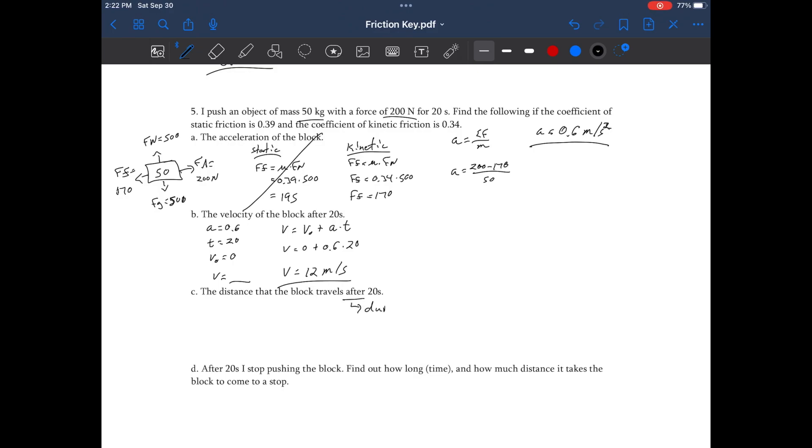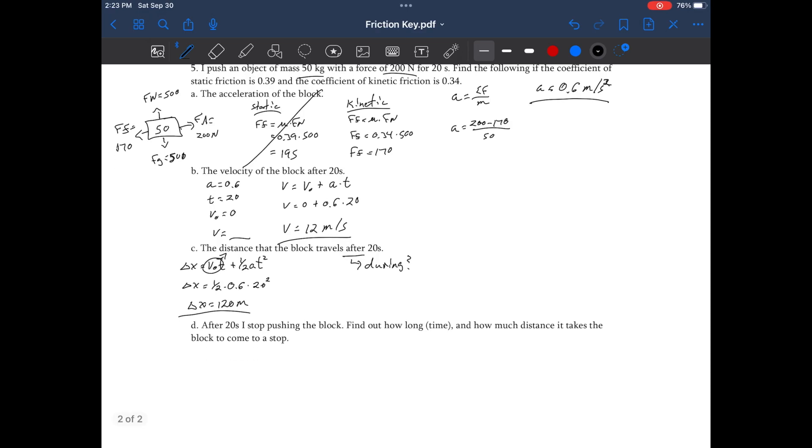The distance the block travels after 20 seconds. I think it's saying, how far does it travel during those 20 seconds? That's how I'm going to respond to it. So we're looking for delta x. We know that acceleration is 0.6. Time is 20. Final velocity. Initial velocity is 0. You could use that final velocity, but I don't fully trust it. It came from a calculation. So I'm just going to use the V₀t + ½at² formula. V₀t is 0, because V₀ is 0. So we have ½ times 0.6 times 20 squared. And I got about 120 meters.